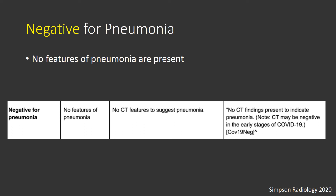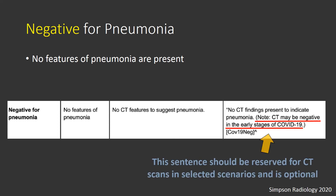The last category is negative for pneumonia. There are no CT features to suggest pneumonia, particularly consolidation, ground glass opacity, or small nodules, and the standardized language reflects that. Also included in the standardized language is an optional phrase: CT may be negative in the early stages of COVID-19, reiterating that there are low negative predictive values in the very early stages of infection. This statement is in parentheses and is reserved for cases where the person is under investigation.